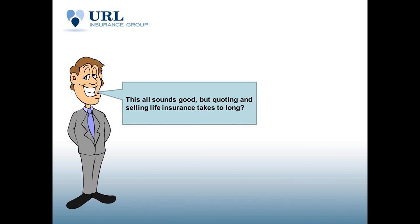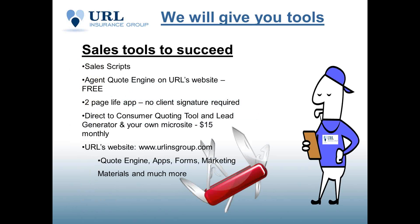This all sounds good, but quoting and selling life insurance takes so long — we get that objection a lot from folks in health insurance and property and casualty. So we want to give you the tools to succeed: sales scripts, our quote engine, and two-page life insurance applications with no client signature required to make it very easy. We have an agent quote engine where you can do all your own quoting, and a direct-to-consumer quote tool and lead generator — your own microsite — for $15 a month.